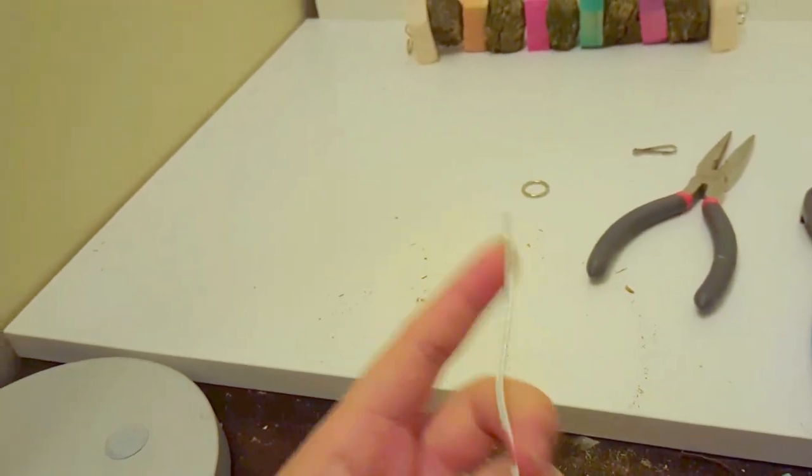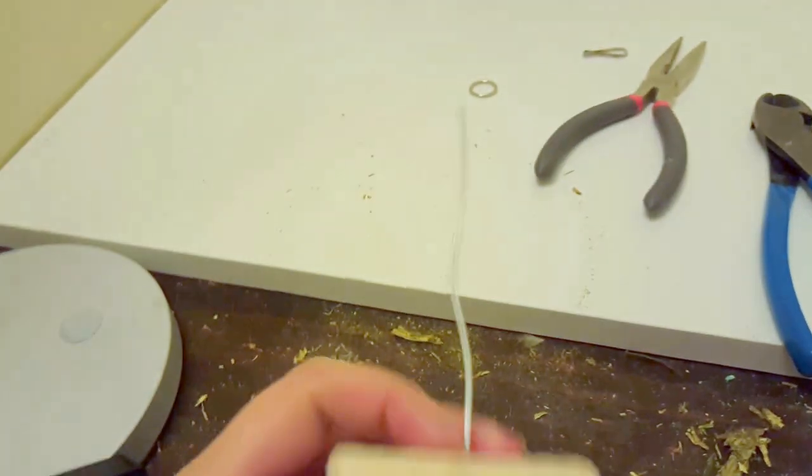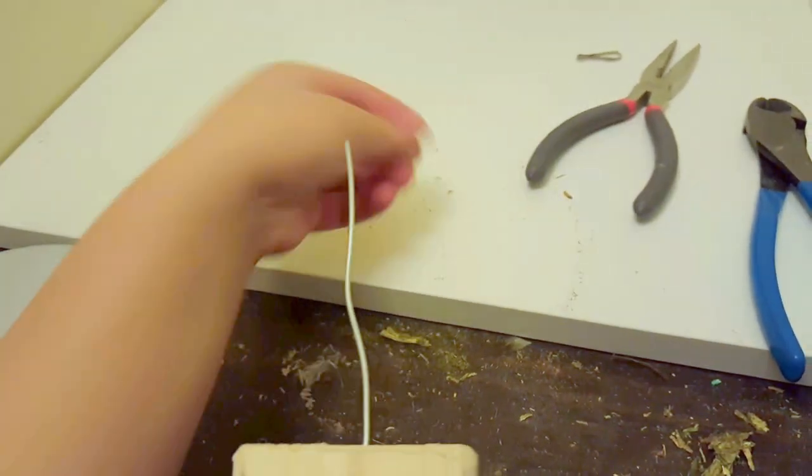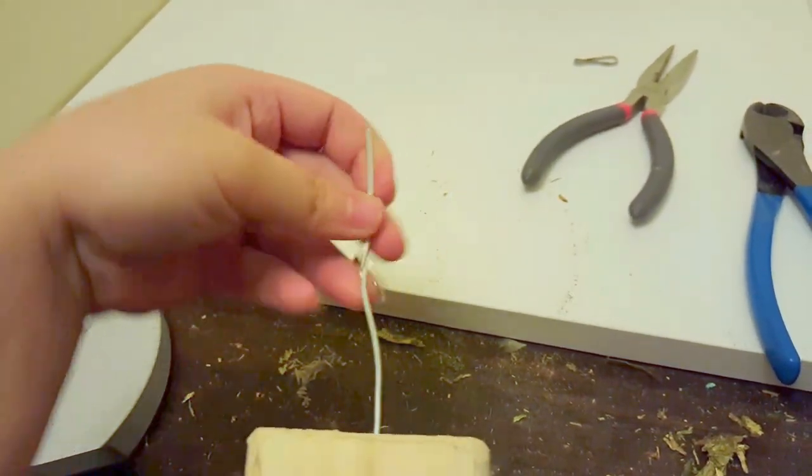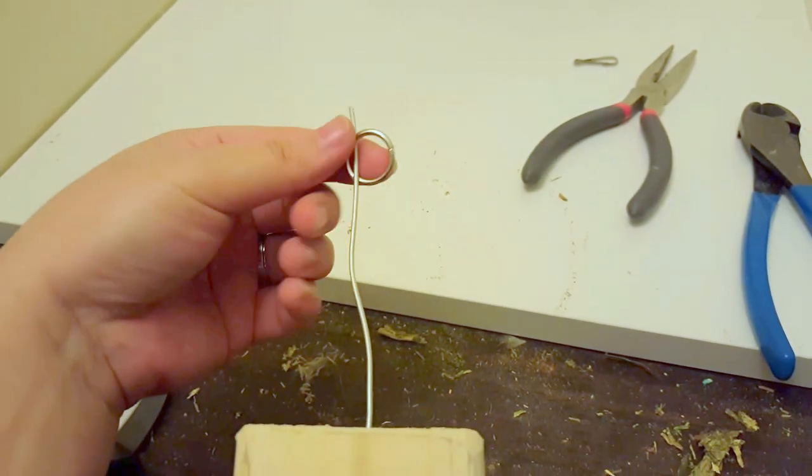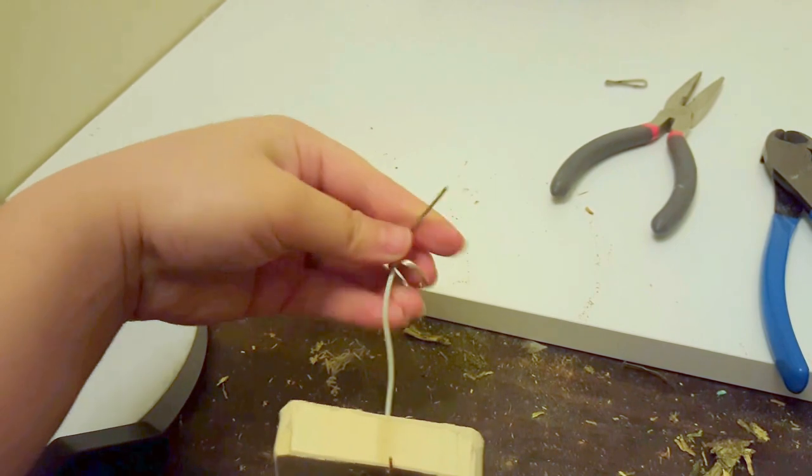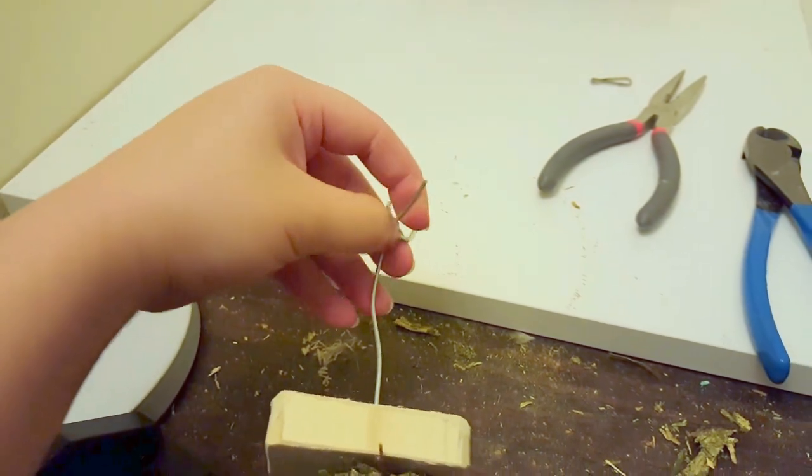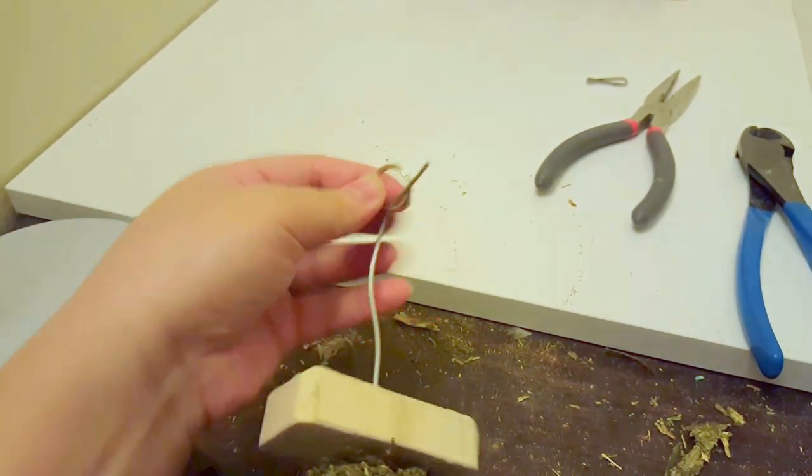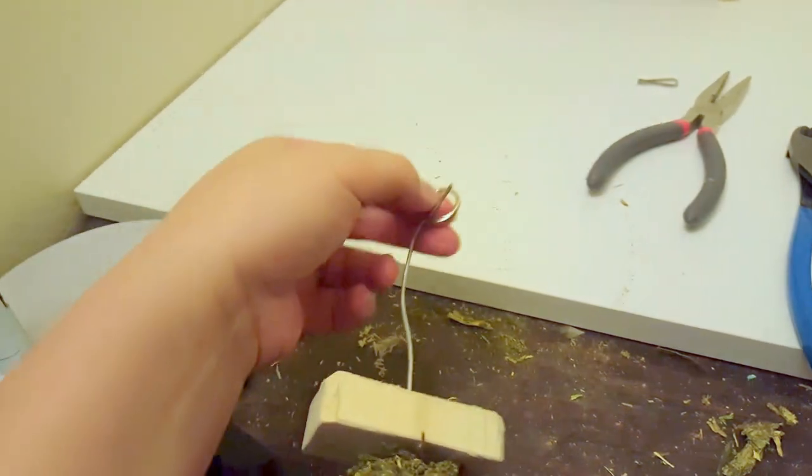So now that I have put on my last block, my pine block, I'm going to take the circle ring piece. I'm going to use the pliers to make a circle with the wire with this circle on the inside. I'll show you guys what that looks like.